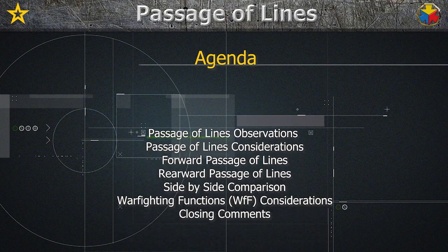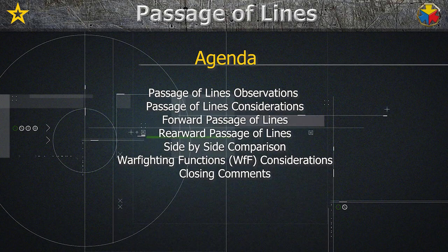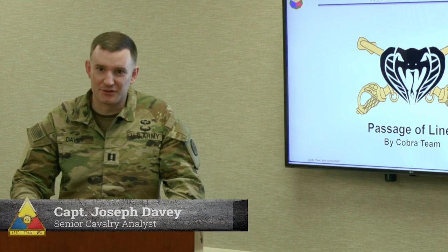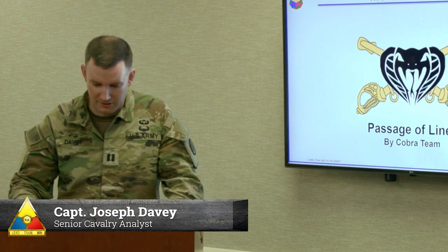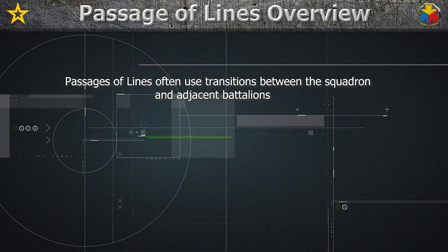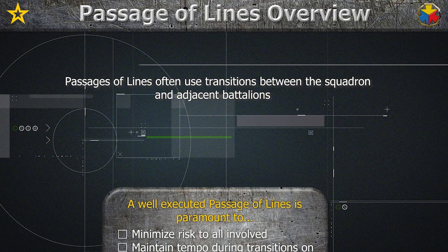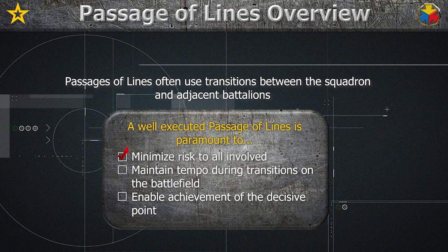NTC Tactical Talk: Passage of Lines, presented by Cobra Team. Transitions represent great risk to force and risk to mission for a cavalry squadron. Passages of lines often use transitions between the squadron and adjacent battalions. A well-executed passage of lines is paramount to minimize risk to all involved, maintain tempo during transitions on the battlefield, and ultimately enable achievement of the decisive point.